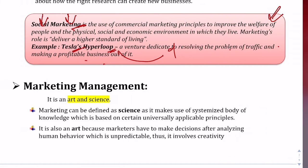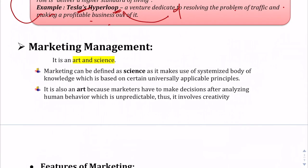Marketing management is both art and science. Science is a collective body of knowledge based on principles that are universal truths or proven through experimentation. Marketing can be called a science because it works on models, theories, and principles that have been proved through experimentation and are universally applicable.